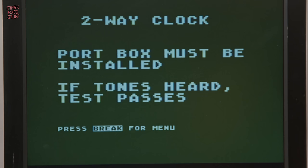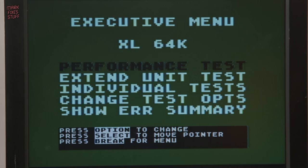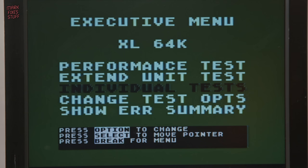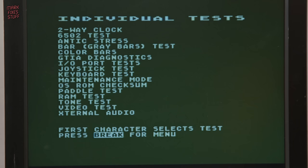We can't use everything in the cartridge because some routines need additional hardware. For example, the two-way clock test needs the external port box. We don't have it, so we can't do that test. But there are quite a lot that we can do. And here's a couple of them.